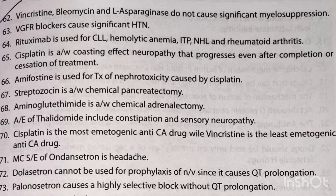VEGFR blockers cause significant hypertension. Rituximab is used for CLL, hemolytic anemia, ITP, NHL, and rheumatoid arthritis. Cisplatin is associated with a coasting effect neuropathy that progresses even after completion or cessation of treatment. Amifostine is used for treatment of nephrotoxicity caused by cisplatin. Streptozocin is associated with chemical pancreatectomy.